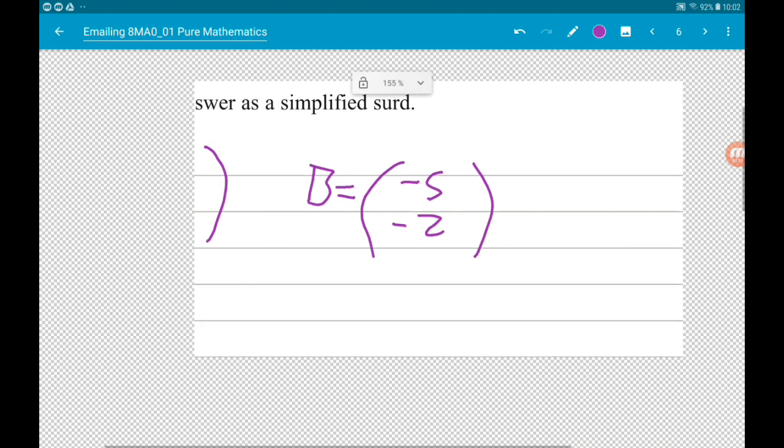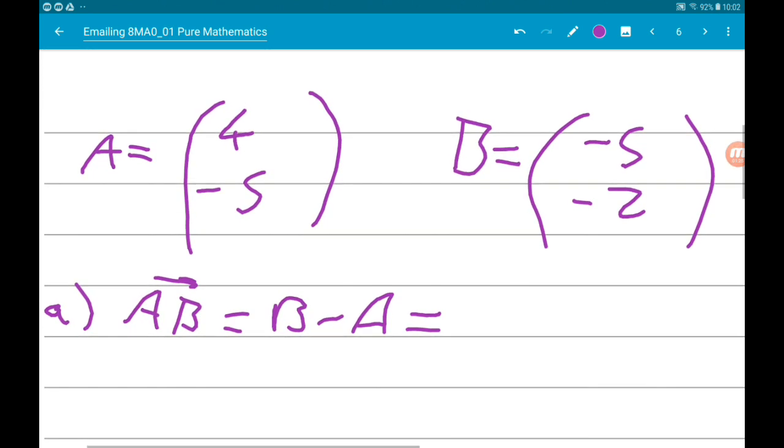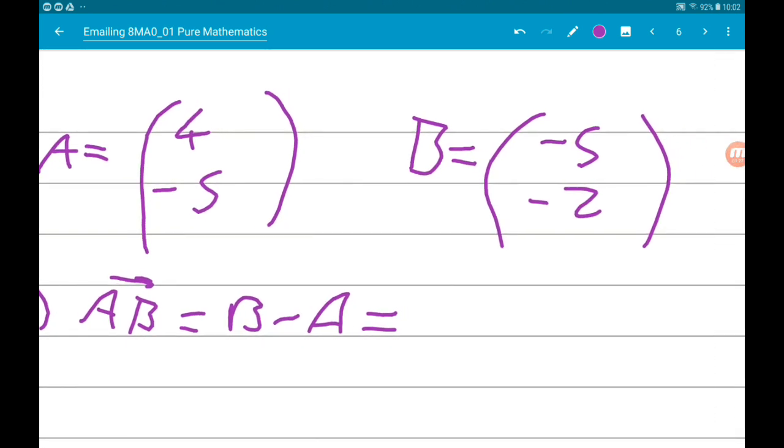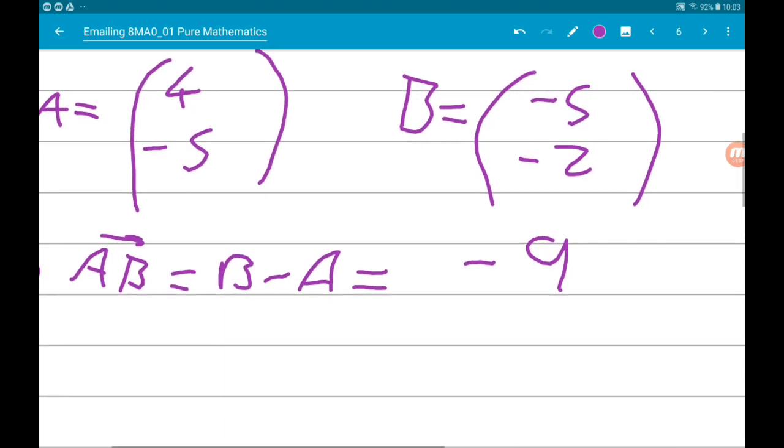Okay, so part a: AB is B minus A. Now that's going to give us -5 minus 4, which is -9, and then -2 minus -5 is -2 and 5, which is 3.